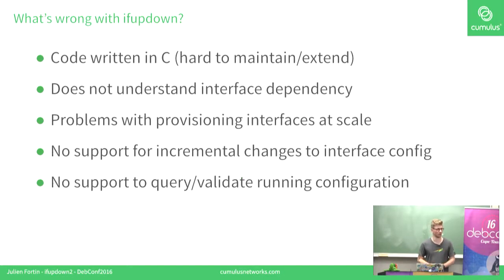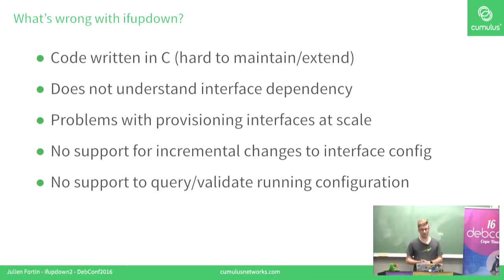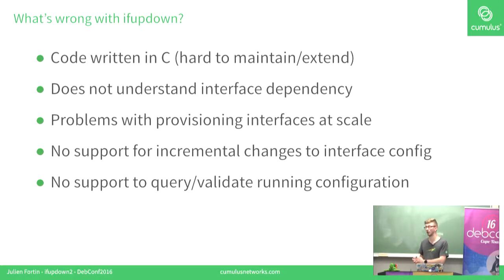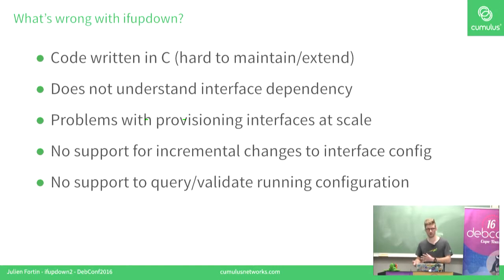Let's say you have 52 switch ports, 2,000 VLANs, 100,000 bridges and a few thousand VXLANs — you can't do it by hand. Good luck doing it by hand. Also, IfUpDown doesn't have support for incremental changes on a live configuration. You have to bring down the interface, make your modification, and bring it up again. There's also a lack of tools to query and validate the running configuration, so it's very hard to troubleshoot your network.